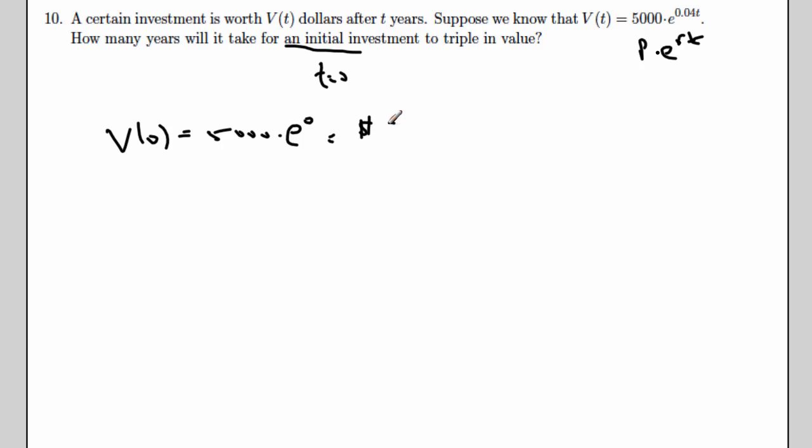So we don't have to be all that clever about figuring out what the initial investment is. It just means the investment when time is 0. So if I'm trying to figure out at what time my investment triples, I'm really trying to find the value of t so that my investment has a value of $15,000.